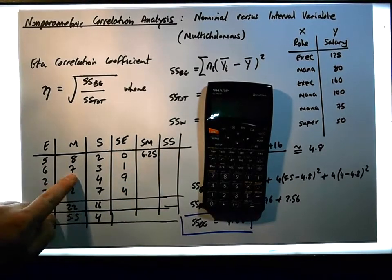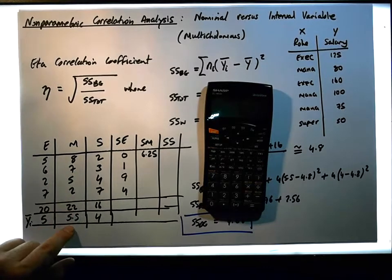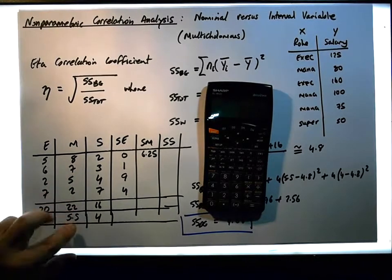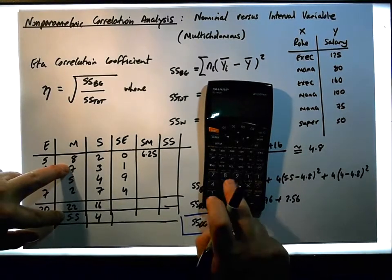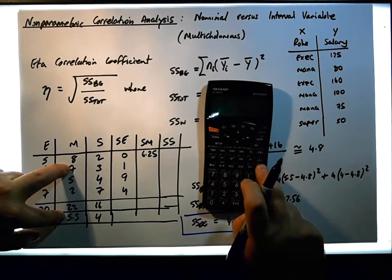The next one is 7 minus 5.5, so 7 minus 5.5 gives us 1.5, 1.5 squared is going to give us 2.25.